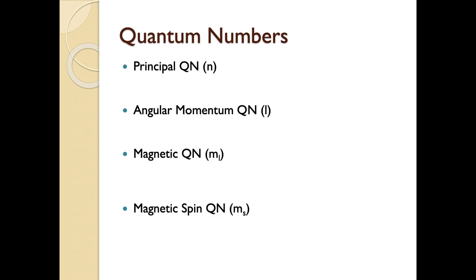There are four individual quantum numbers in total. We have the principal quantum number, represented by lowercase n. We have the angular momentum quantum number, represented by lowercase l — sometimes called the azimuthal quantum number, though that's an older term. You'll probably hear it called the angular momentum quantum number, or just l. We have the magnetic quantum number, m-sub-l, and the fourth is the magnetic spin quantum number, m-sub-s.